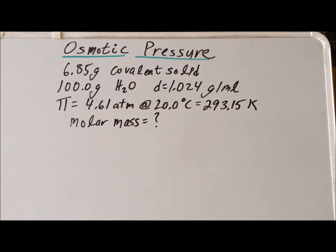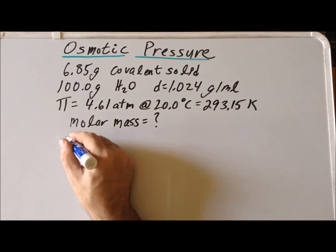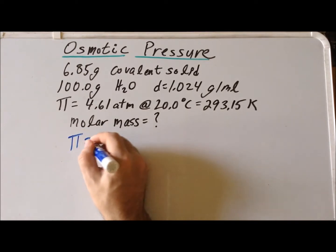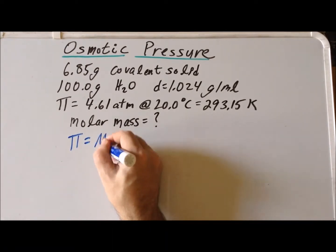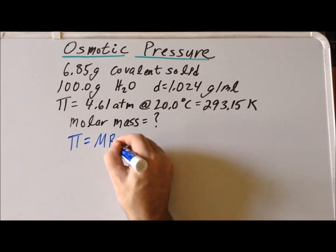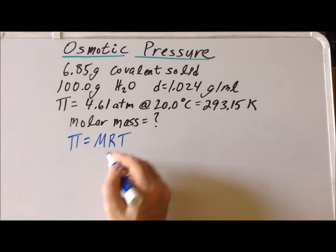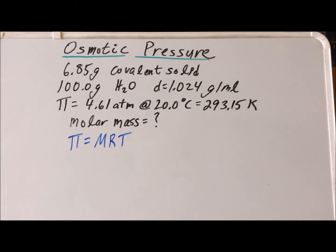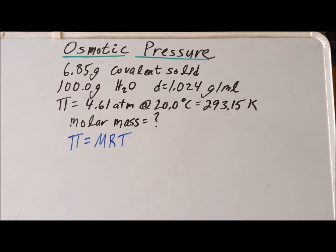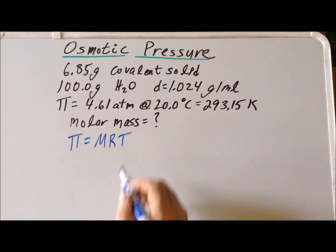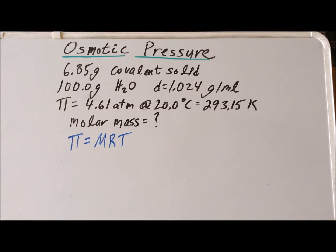First, we recall that our formula for osmotic pressure is that the pressure is equal to MRT, where M is the concentration, R is the gas constant, and T is the thermodynamic temperature.